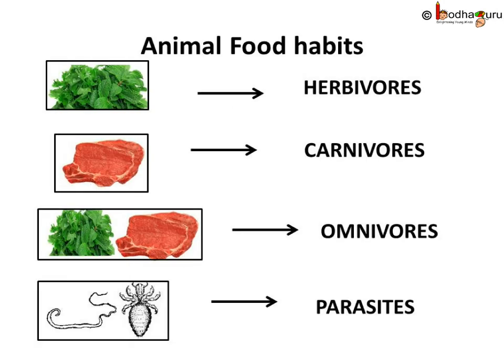So if we sum up the various food habits of animals: animals that eat plants only are called herbivores. Herb means small plants, so herbivores are plant-eating animals. Flesh or meat-eating animals are called carnivores. 'Carn' means flesh, hence carnivores are flesh-eating animals. Animals which eat both plants and other animals are called omnivores. 'Omni' means all, so omnivores eat all — plants and meat too.